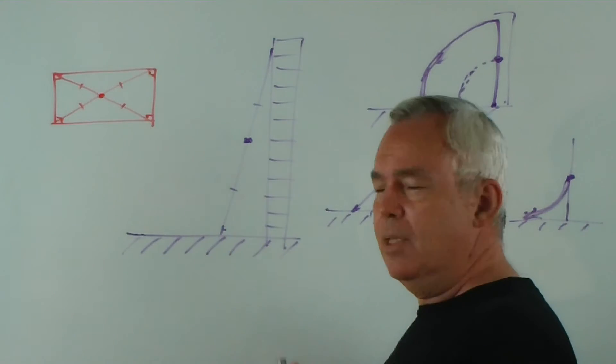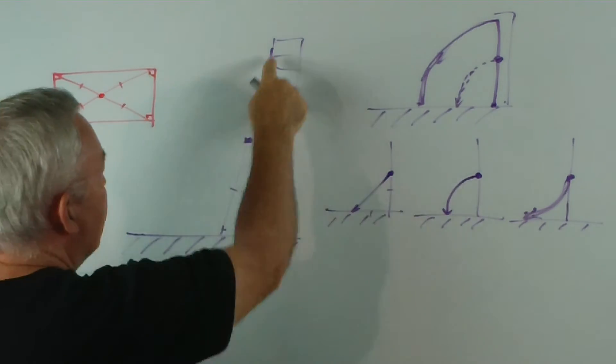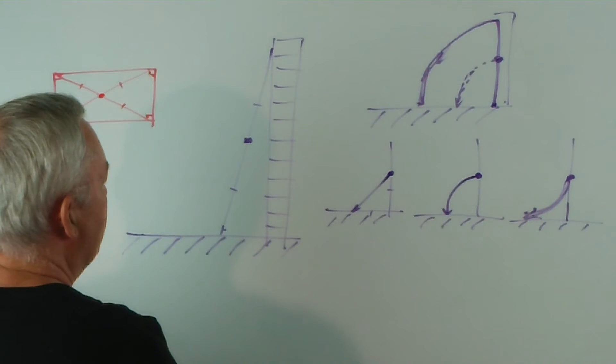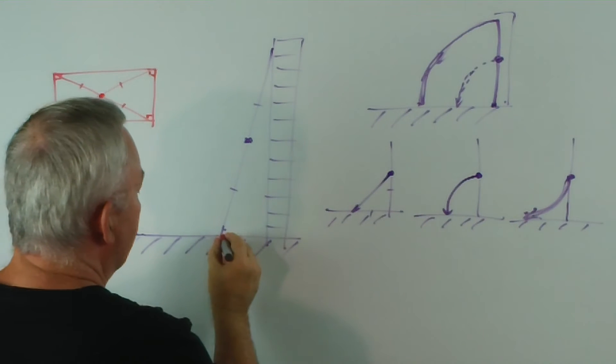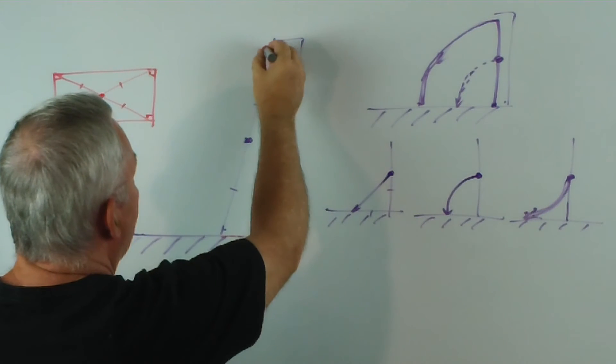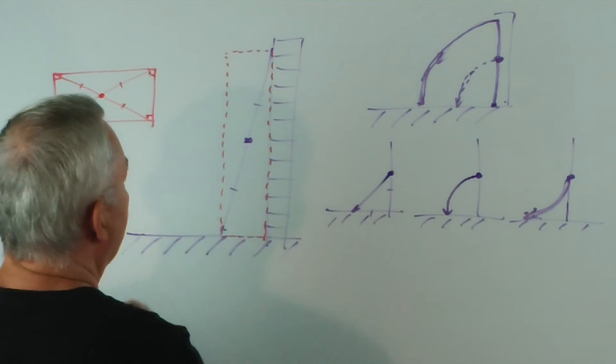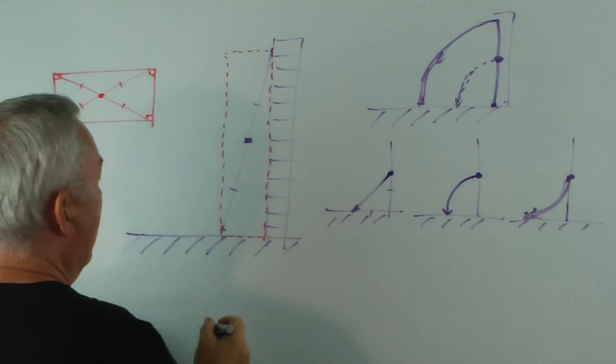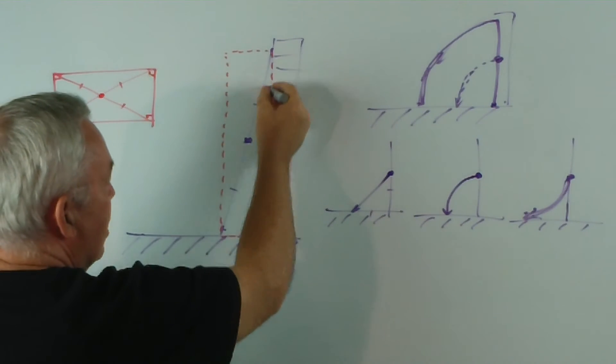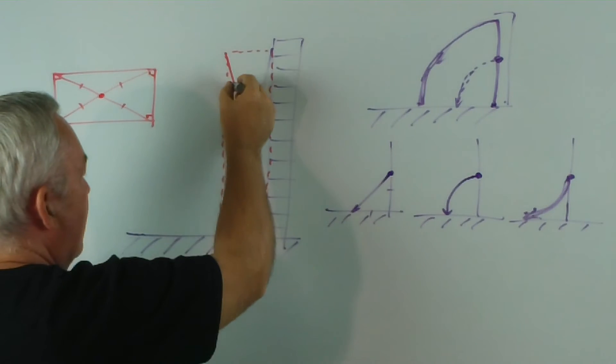Now let's apply this thinking to the ladder against the wall. If I take this position of the ladder, for example, and I imagine a rectangle drawn here, and instead of just having this ladder, I imagine another ladder here.